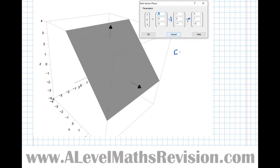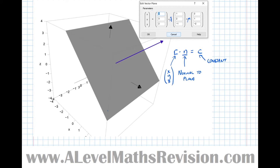The alternative representation is r·n = c, where r means (x, y, z), n is a vector normal to the plane, and c is just a constant that fixes the plane in space. Any point on the plane, when dot-producted with the normal vector, gives that constant. The normal vector comes directly out of the plane, making a right angle with it.